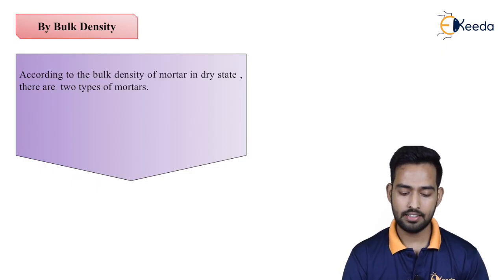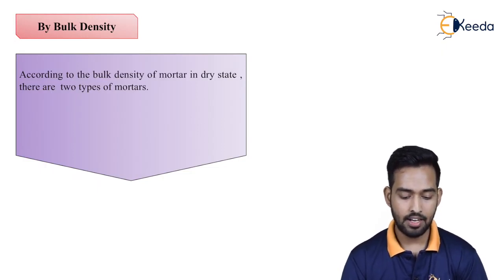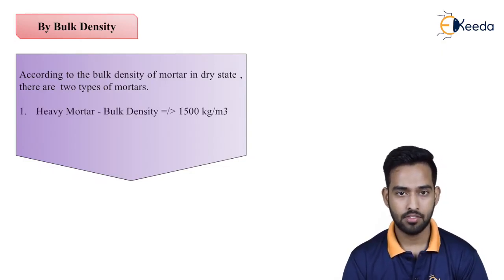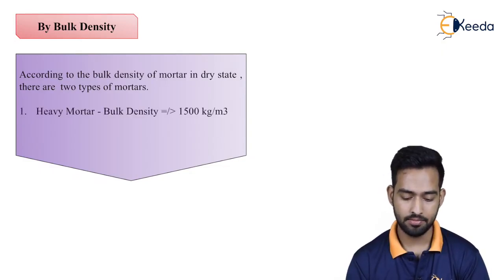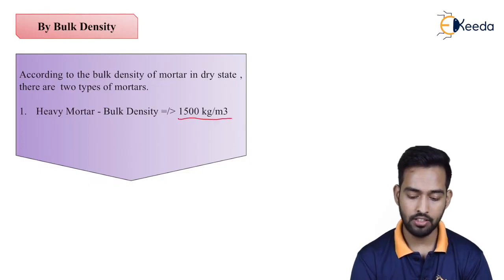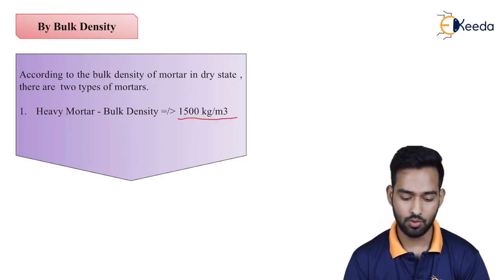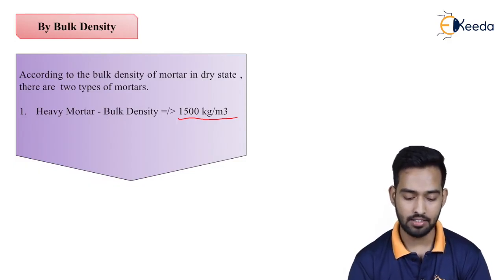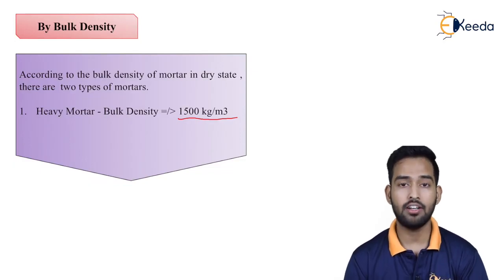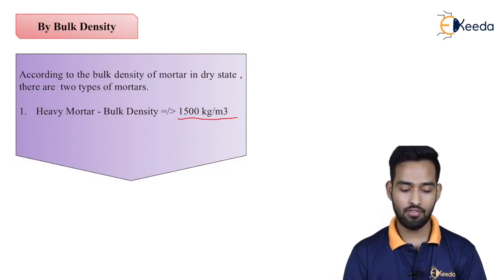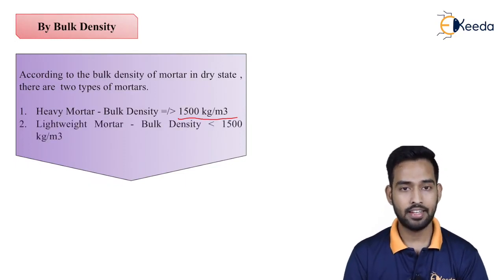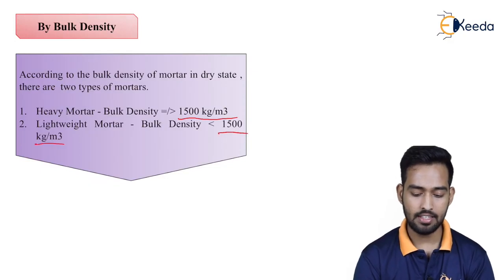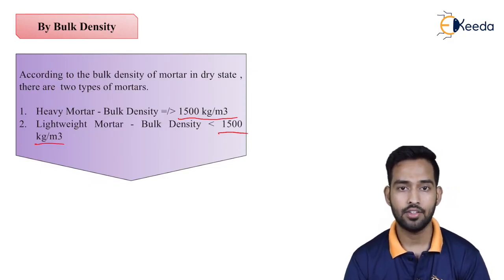Let us talk about the first classification, that is by bulk density. According to the bulk density of mortar in dry state, there are two types. First is heavy mortar, which has a bulk density equal to or more than 1500 kg per meter cube. Second is lightweight mortar, which has a bulk density less than 1500 kg per meter cube.